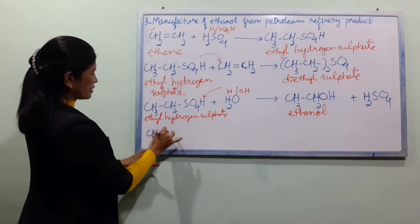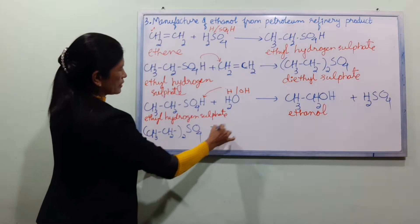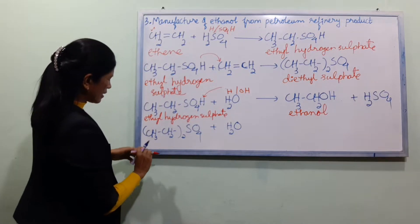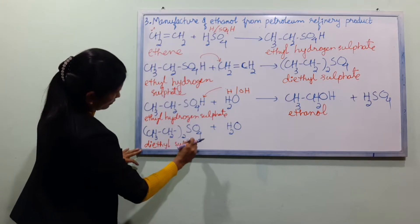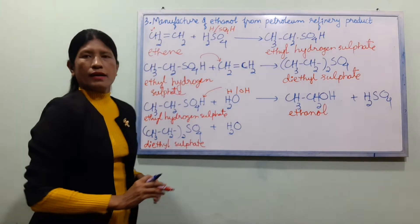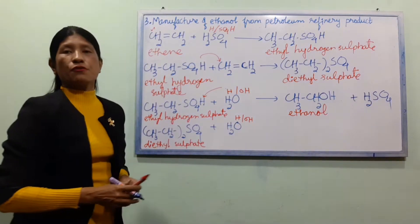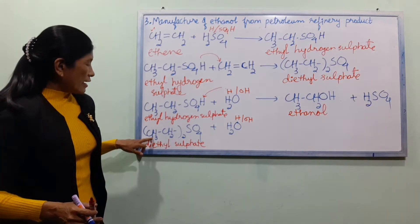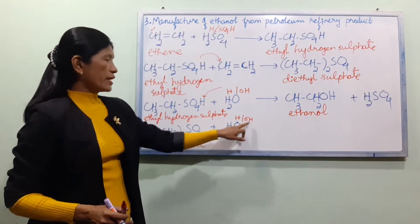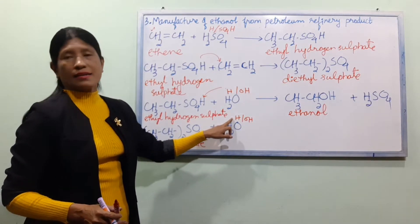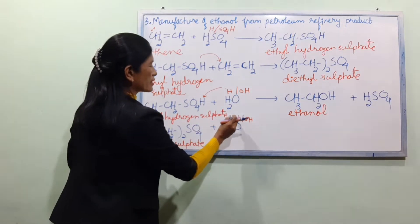CH3CH2SO4H plus H2O gives CH3CH2OH plus H2SO4. H2O splits into H and OH.